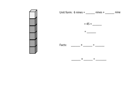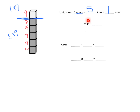The second part shows six nines: nine, nine, nine, nine, nine, and nine. The unit form is six nines, broken into five nines plus one nine. We already know five nines equals 45, so we add one more nine: 45 plus 9. Using a number bond, change 9 into 5 plus 4, so 45 plus 5 is 50, plus 4 more is 54.